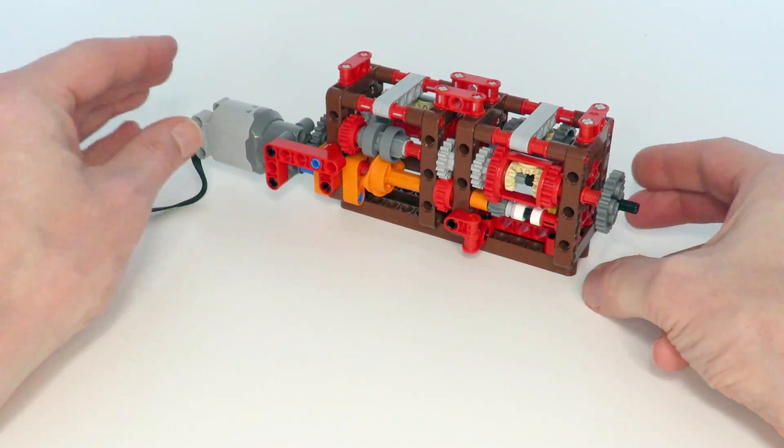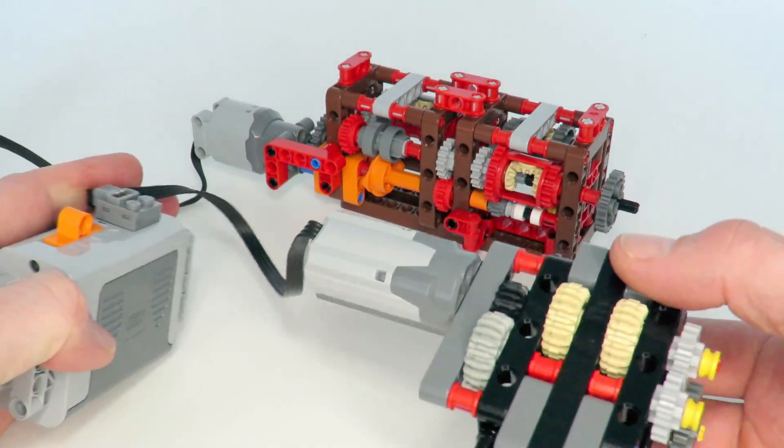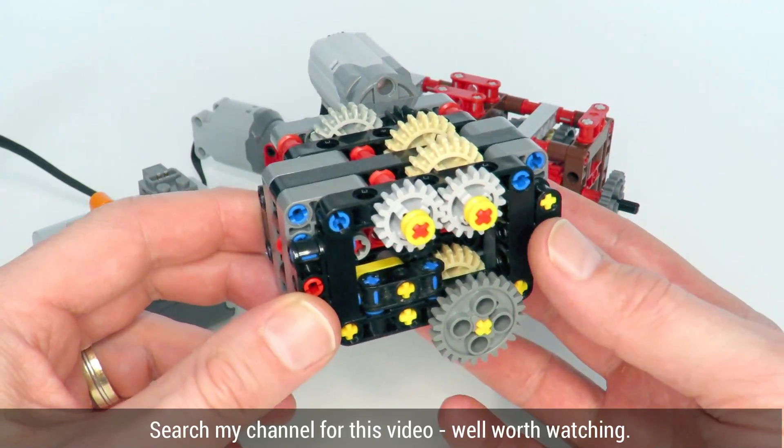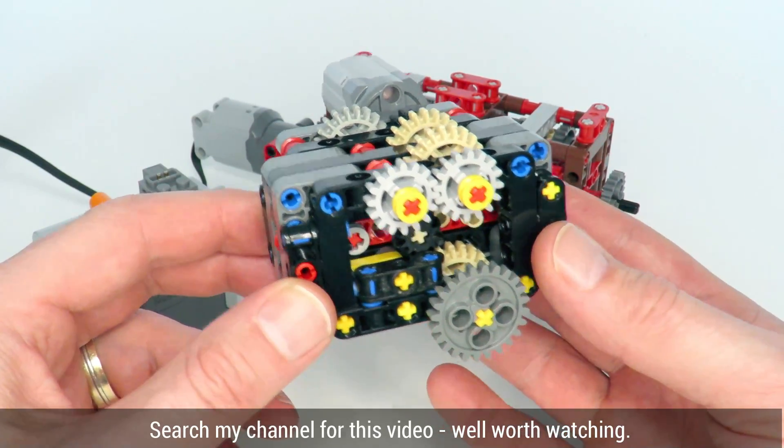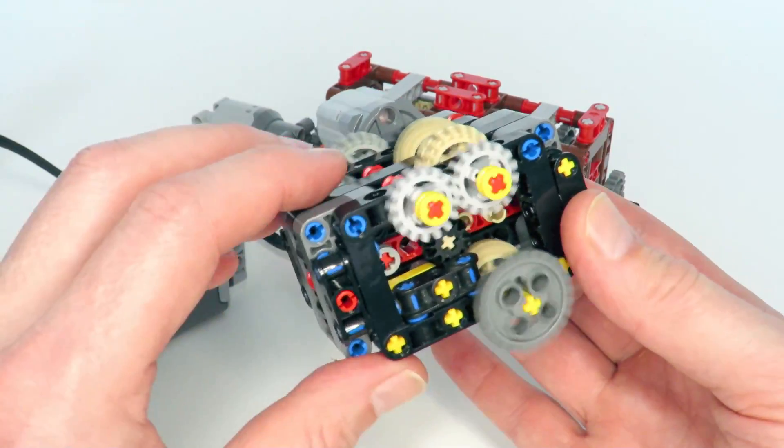Now the idea for this gearbox came about from the issues I had with another design that I presented a couple of weeks ago. This is a design for a compact two-speed automatic gearbox. Now the issue I found with this particular design is that even though it's nice and compact, there's an issue where when you transition between the gears.